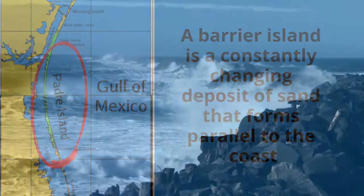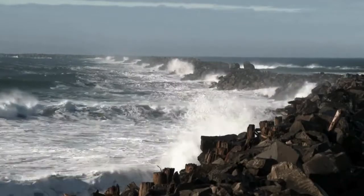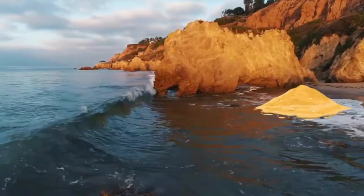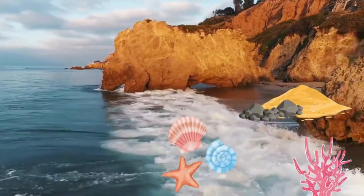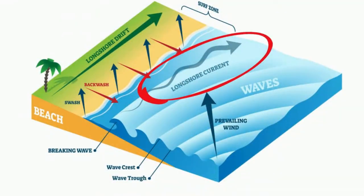They protect the mainland from erosion and storm surge. Waves carry a variety of materials such as sand, rock, dead corals, and shell. In addition, longshore currents transport and deposit this material. A longshore current is the result of how the waves strike the beach. Most waves approach the beach at a slight angle and retreat perpendicular.